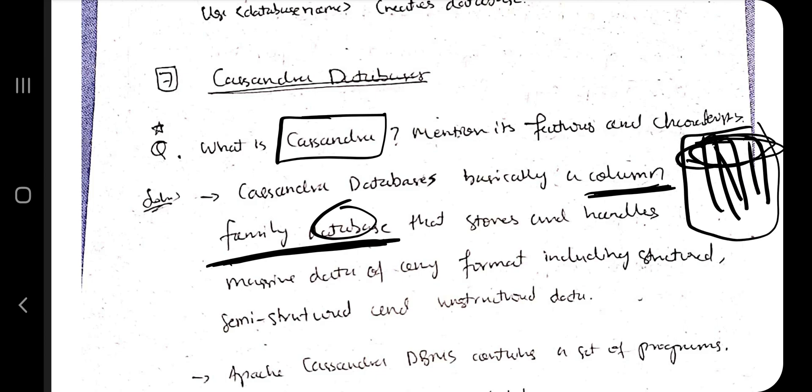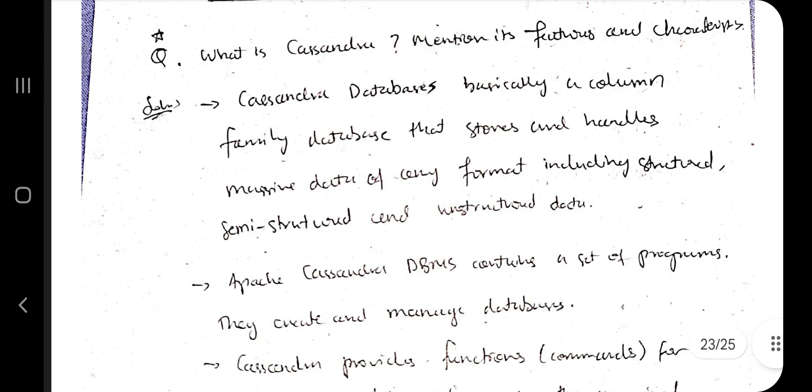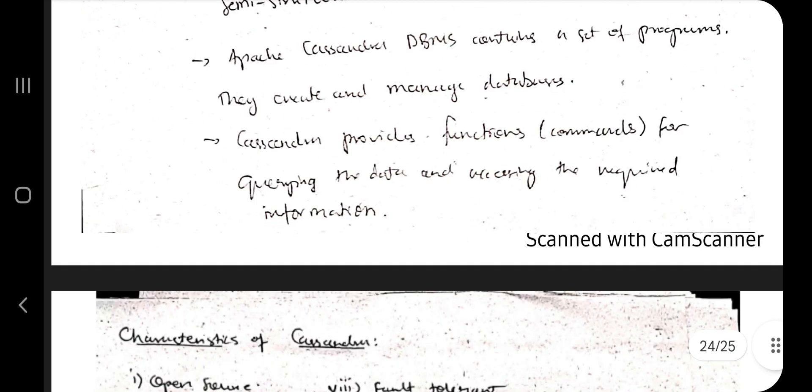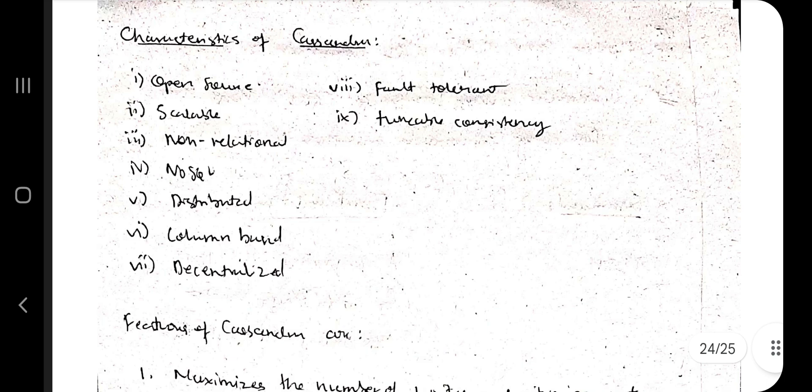This kind of picture you have to remember for Cassandra. It stores and handles massive data, all the good things about databases are mentioned here. It is a set of programs to create and manage database, provide functions for querying and accessing. Characteristics also same: what MongoDB has, like distributed, NoSQL, scalable and so on.